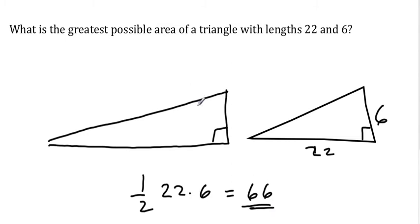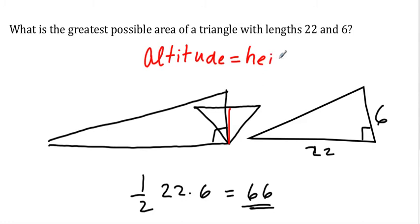If I put a greater or lesser angle, in both cases I shorten my height or my altitude. Remember the word altitude—that's fair game on the SAT. Altitude is equal to height. The height of a triangle for one half base times height is a line segment that is perpendicular to the base from the vertex.